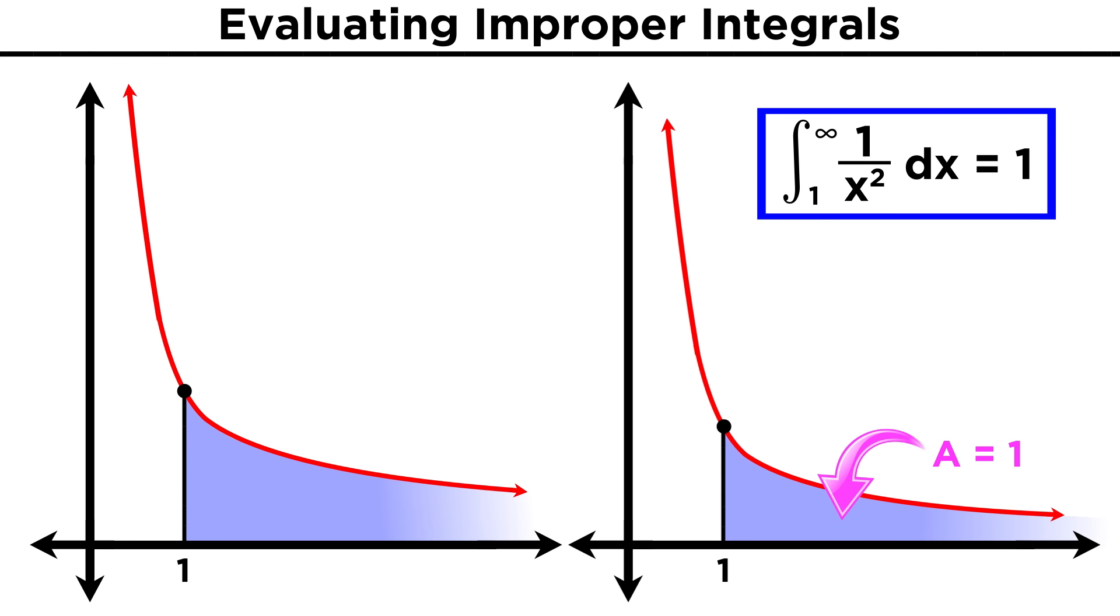From this, we conclude that one over x squared gets small enough, fast enough, that the area under the curve is finite, while one over x also gets small enough, as it too goes to zero as x approaches infinity, it just doesn't do it fast enough, and we needed calculus to tell us this fact.